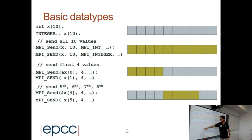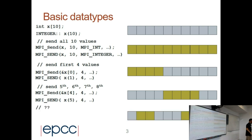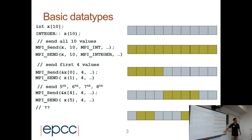So, in C that's index 4, in Fortran index 5. And how can I send, for example, two non-contiguous portions — these two elements and then those two? We will see that with the derived data types.